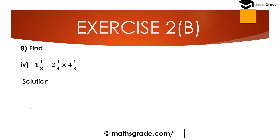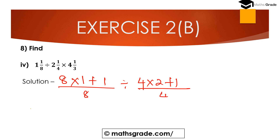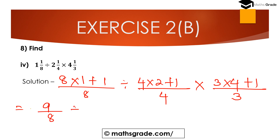Question 8, fourth bit: 1 1/8 ÷ (2 1/4 × 4 1/3). Convert mixed fractions to improper fractions: 8 × 1 + 1 = 9, so 9/8. Division of 4 × 2 + 1 = 9, so 9/4. And multiply with 3 × 4 + 1 = 13, so 13/3.